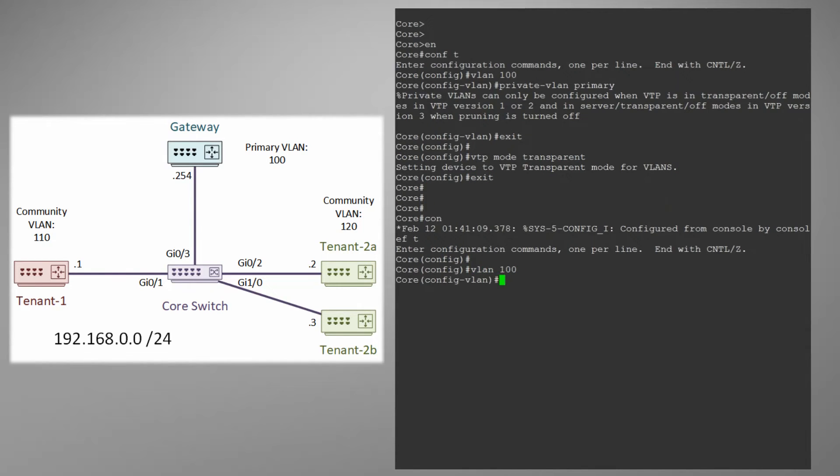We configure VLAN 100 as the primary VLAN and associate our two secondary VLANs with it. The only configuration on the secondary VLANs is to set their type. For us that's community in both cases.